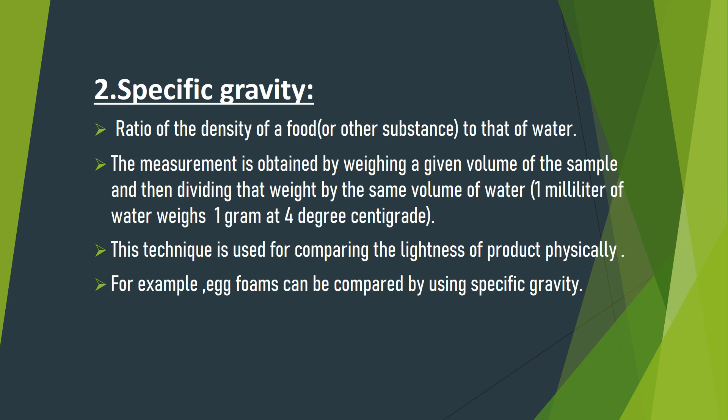Specific gravity is the ratio of the density of a food or other substance to that of water. The measurement is obtained by weighing a given volume of the sample and dividing the weight by the same volume of water — one milliliter of water weighs one gram at four degrees centigrade. This technique is used for comparing the lightness of products; for example, egg foam can be compared using specific gravity.